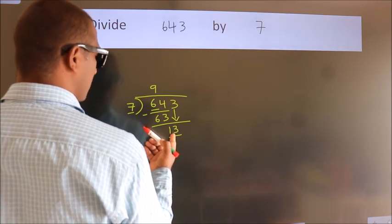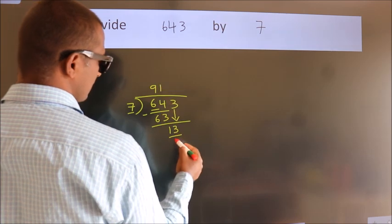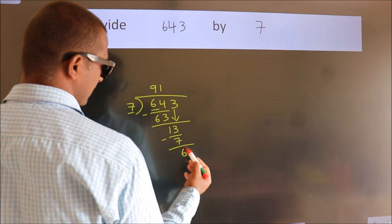A number close to 13 in 7 table is 7. Now we subtract. We get 6.